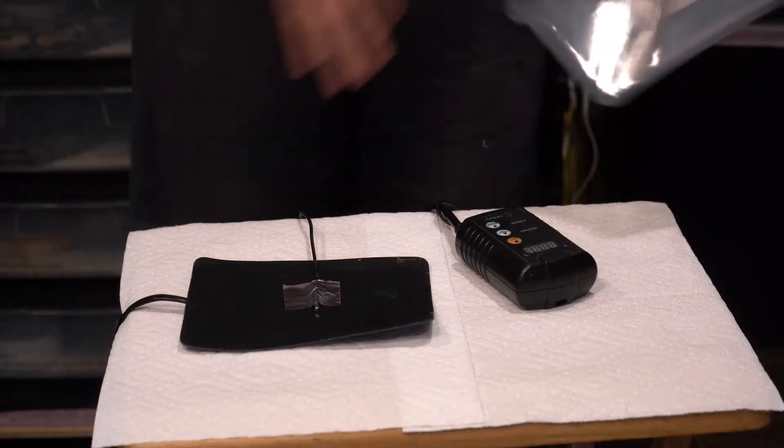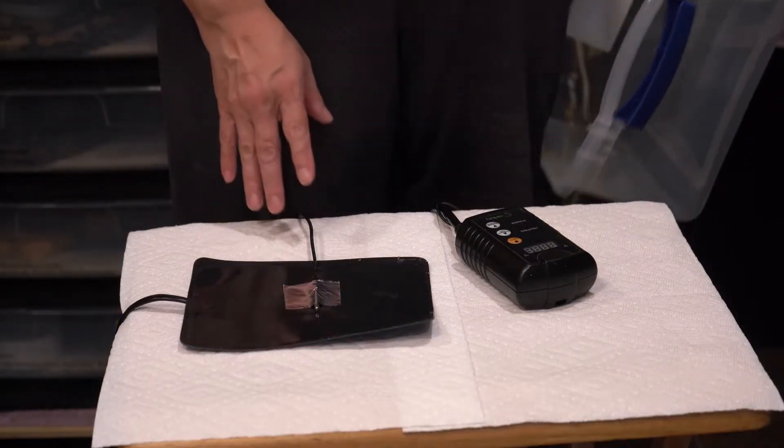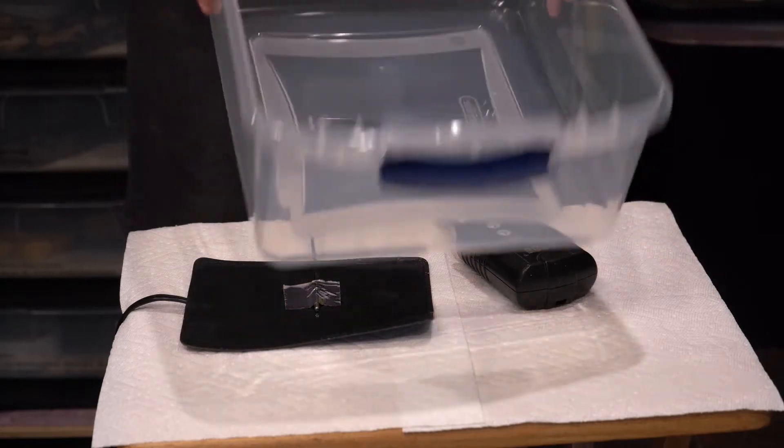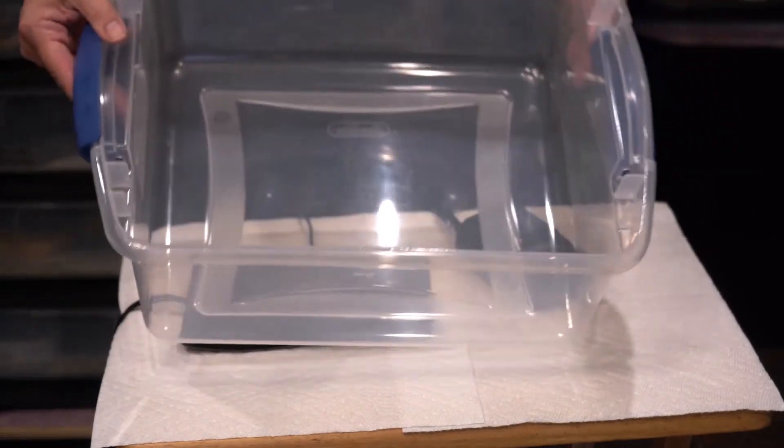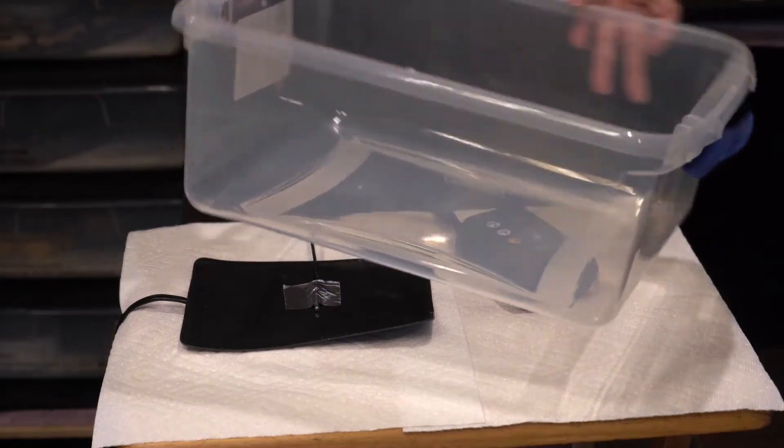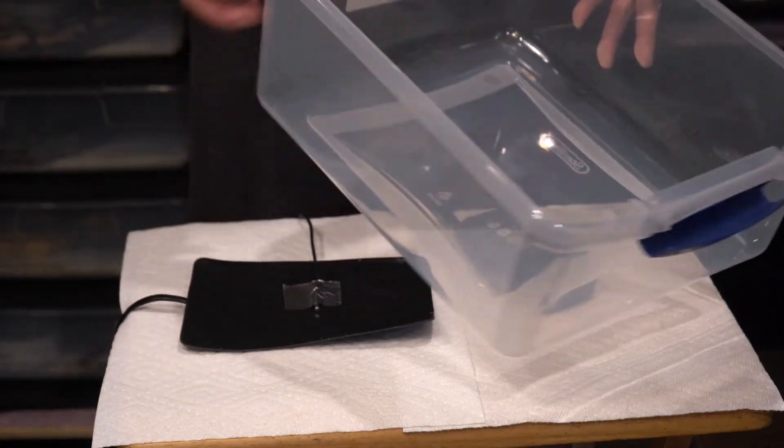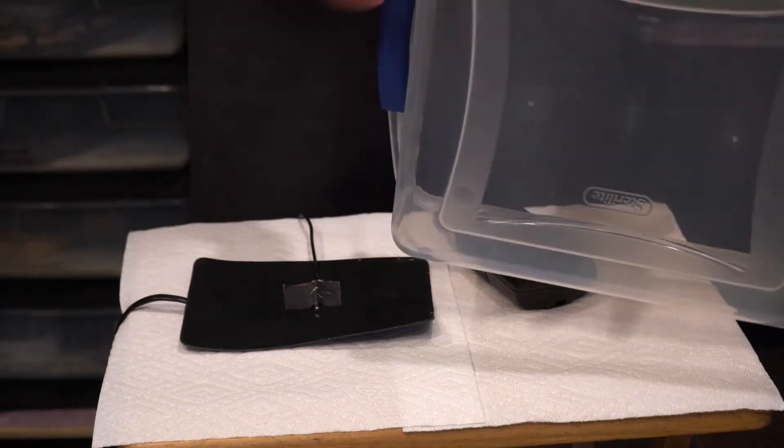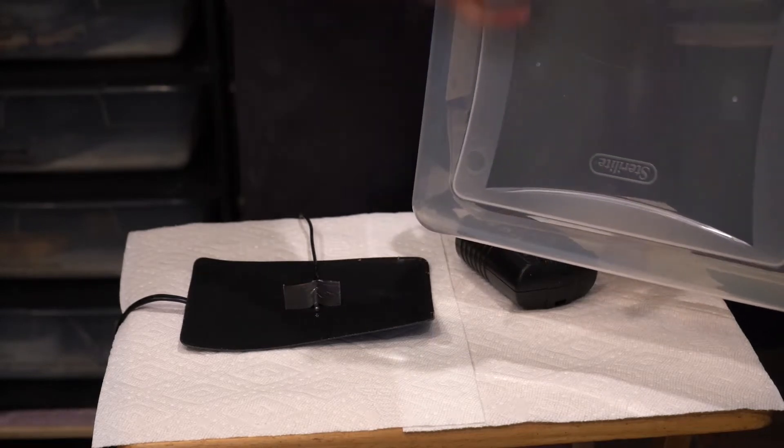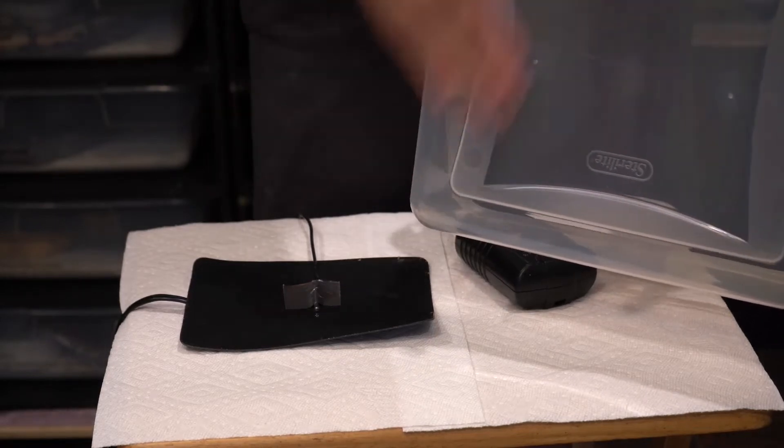Once you have your heat mat and your probe set up, what you want to do is attach it to your tub. Whether it be this tub or the other tub, they're both going to be done the same way.